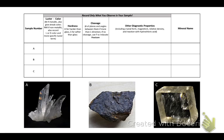Part 1 uses a mineral identification Excel sheet located in Blackboard, which looks a lot like what you see on your screen. This sheet has several columns, such as sample number, luster, hardness, cleavage, other diagnostic properties, and mineral name. The sample number field corresponds to the letter you will see labeled on each of the mineral samples in the mineral kits.